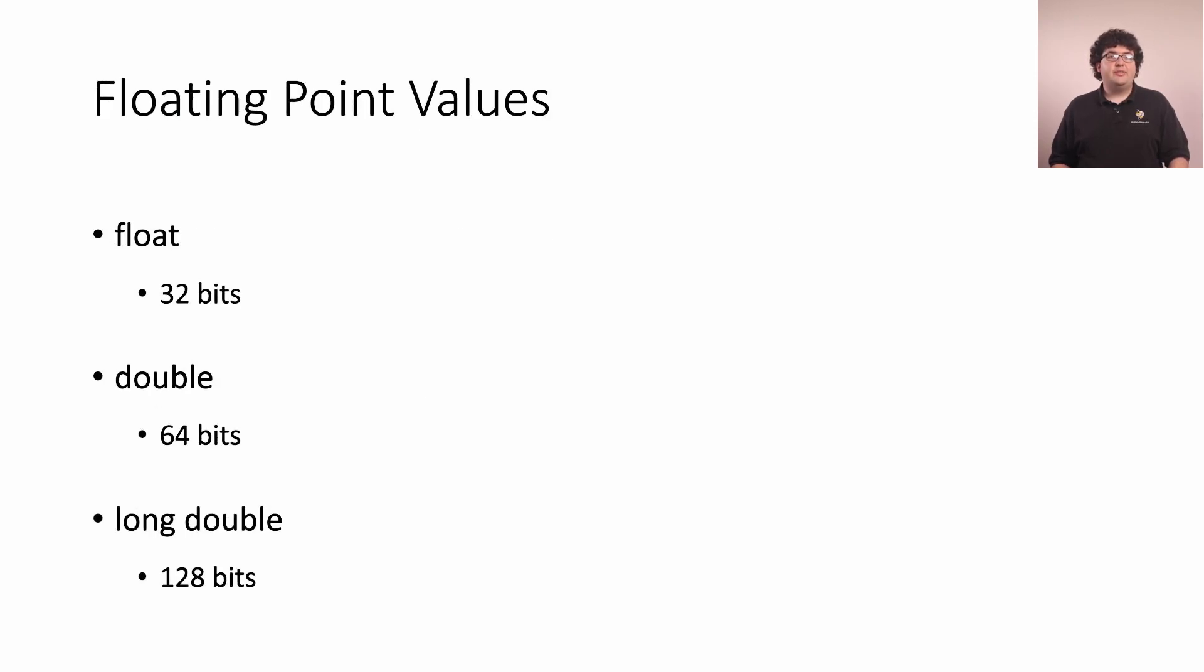For floating point values, there are three sizes available with the names float, double, and long double. These use 32, 64, and 128 bits respectively. Larger floating point types offer greater max values and decimal precision at the cost of consuming more memory.